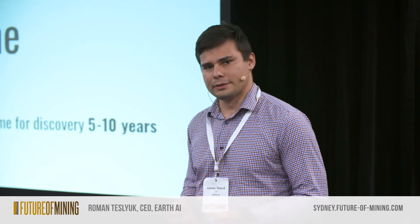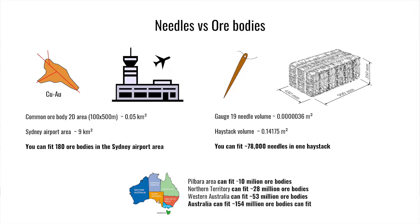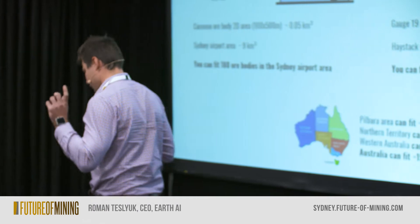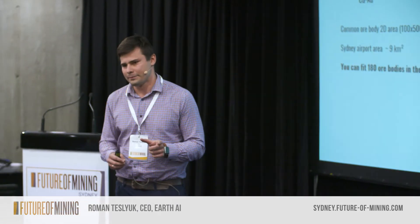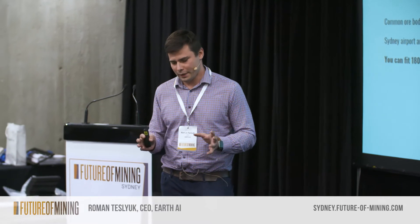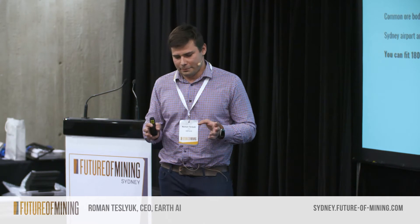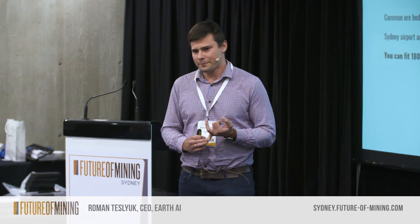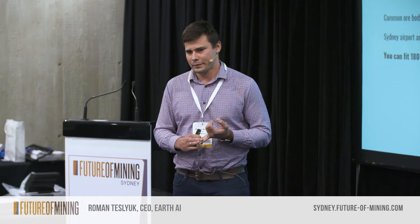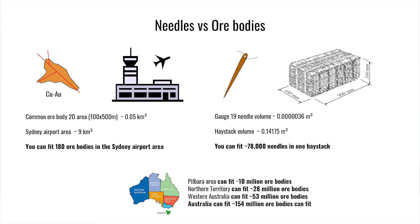People compare finding an ore body to finding a needle in a haystack. But looking at the data, a very small needle — like a 19-gram gold nugget — means you can fit around 78,000 needles in the haystack, so your chances are one in 78,000. For a regular-size ore body of 100 by 500 meters, you can fit around 10 million in the Pilbara and 53 million in WA. That's three orders of magnitude more complex than finding a needle in a haystack.